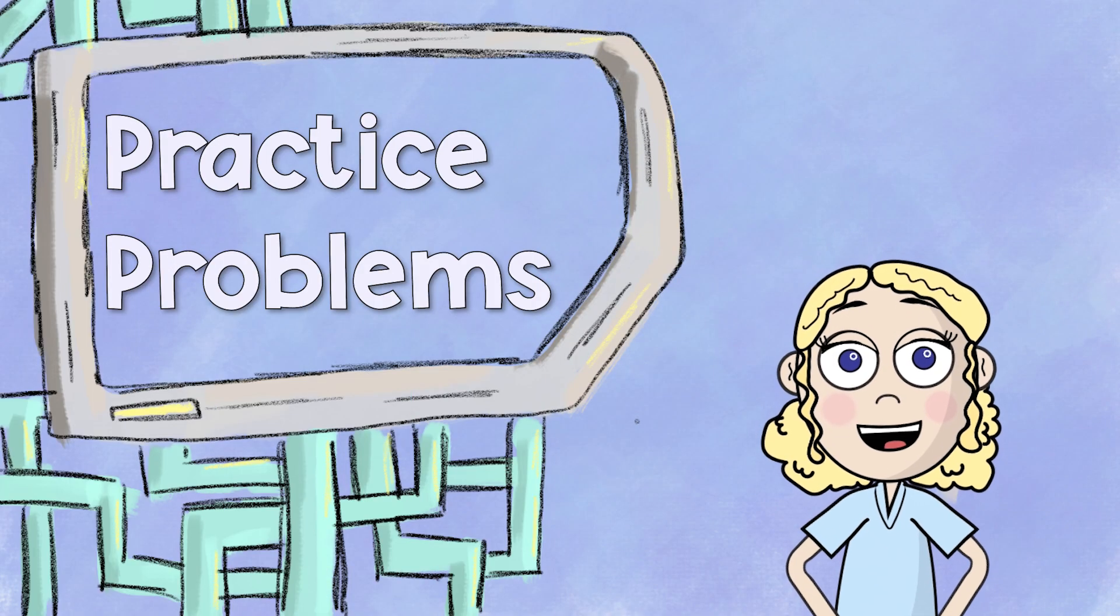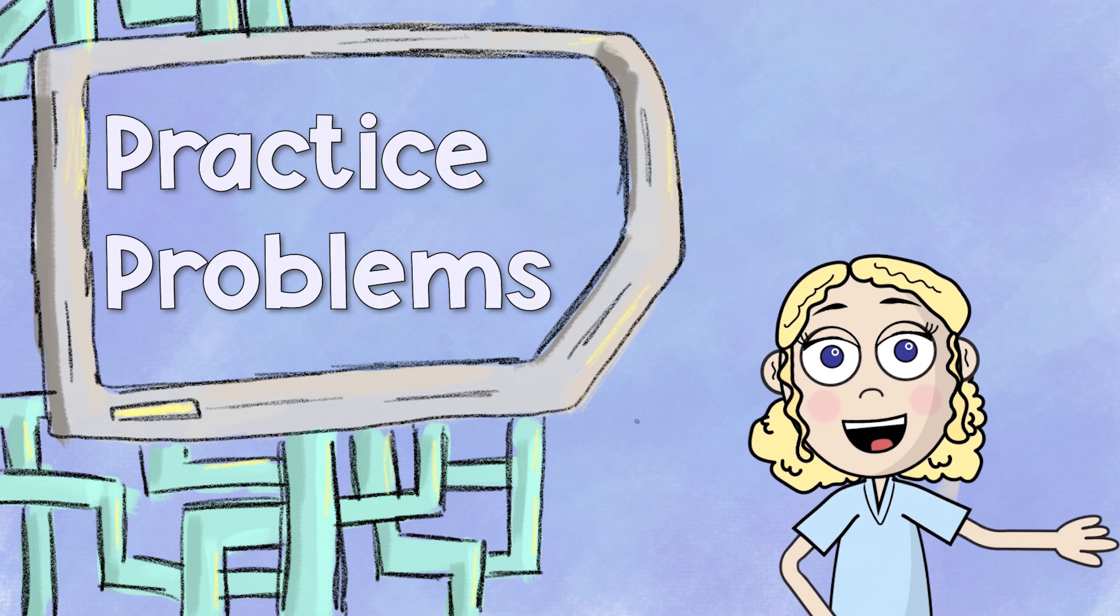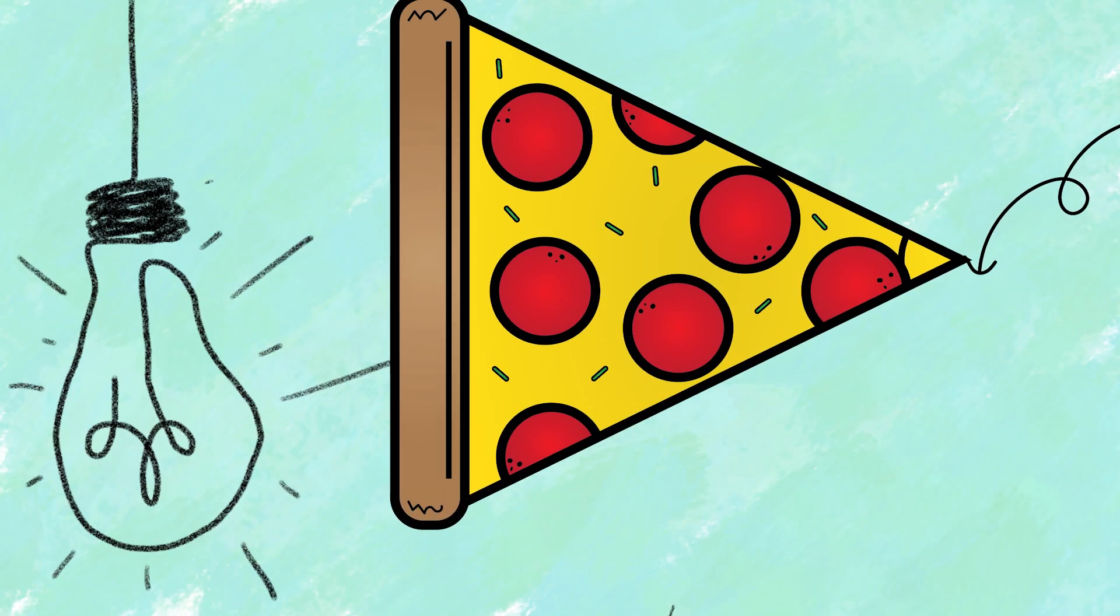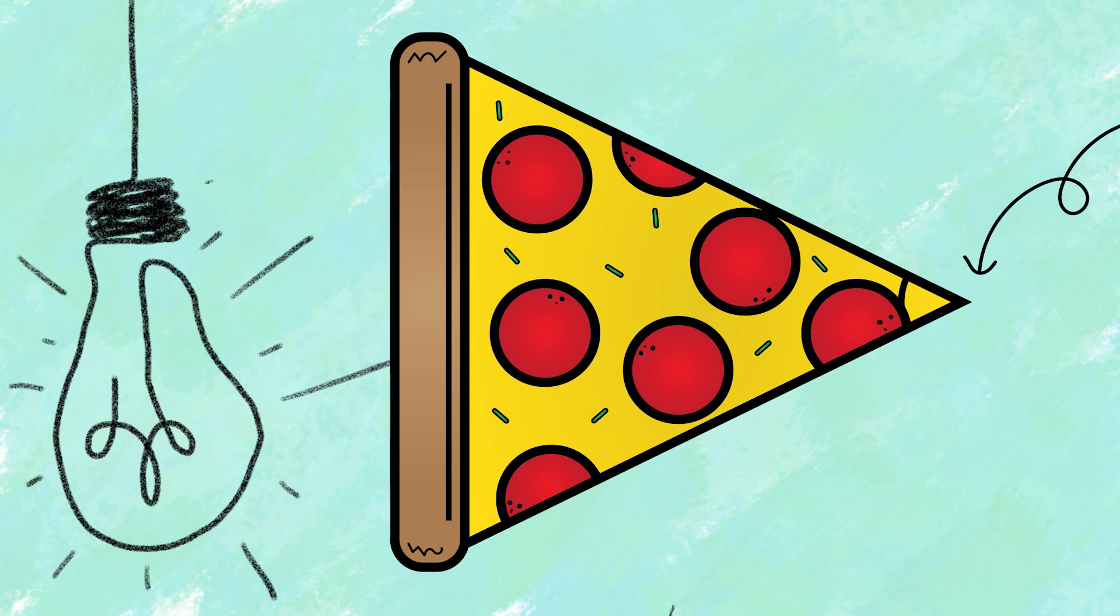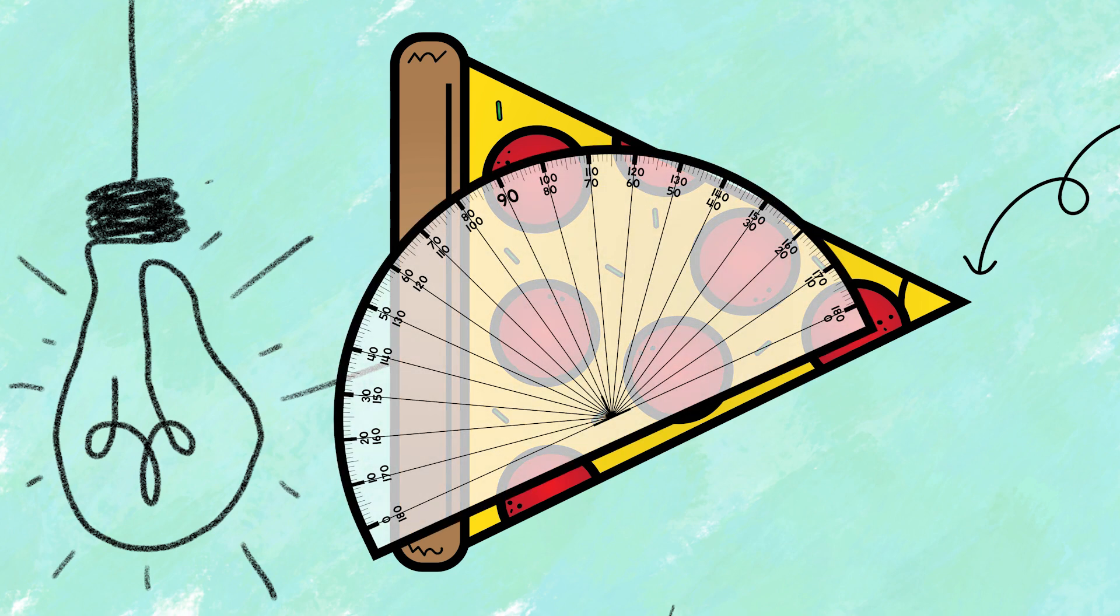All right, now that you know how to measure, let's try a few practice problems. Let's look at this pizza. Step one, we're going to line up the dot, circle, or T on the vertex.